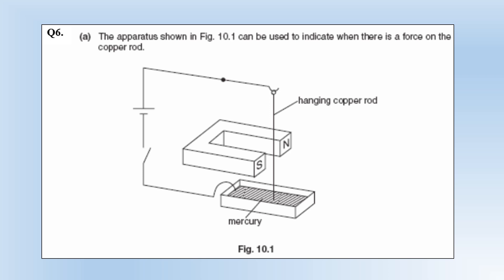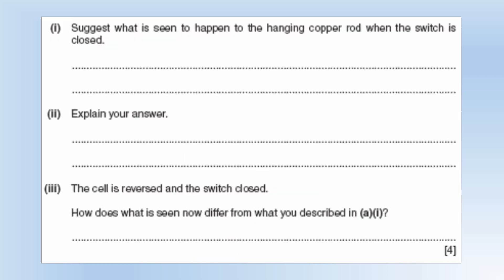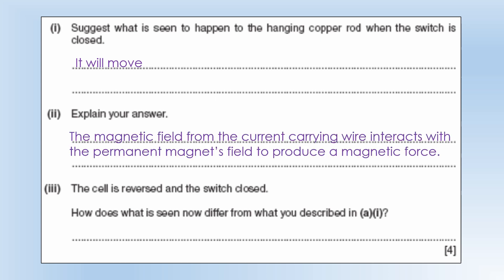The apparatus shown in this diagram can be used to indicate when there is a force on the copper rod. So you've got a hanging copper rod and we've got a magnet. So that if we get a current through the copper rod, that is going to move. Suggest what is seen to happen to the hanging copper rod when a switch is closed. Well it's going to move. Fairly simple. So why is it going to move? Well the magnetic field from the current carrying wire interacts with a permanent magnet's field to produce a magnetic force. That's what causes the movement.